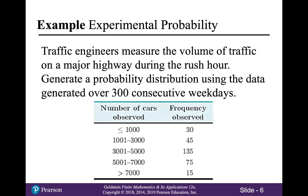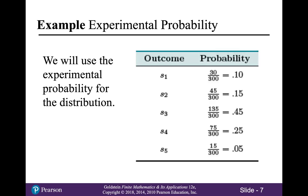For example, traffic engineers measure the volume of traffic on a major highway during rush hour. Generate a probability distribution using the data generated over 300 consecutive weekdays. On 30 different days, there were less than or equal to 1,000 cars observed. On 45 different days, there were 1,001 to 3,000 cars observed, and so on. We will use the experimental probability for the distribution, so divide each of the observed frequencies by the total number of observations, which is 300. That gives you the experimental probabilities: the probability of outcome S1 is 0.10, the probability of outcome S2 is 0.15, and so on.